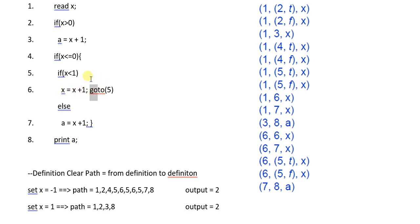We go back to line number five, and now x has become one. One is not less than one, so this predicate logic is not true. We go to its else part and land at line number seven. From line number seven we go to line number eight. So the path is: 1, 2, 4, 5, 6, 5, 6, 5, 7, 8.